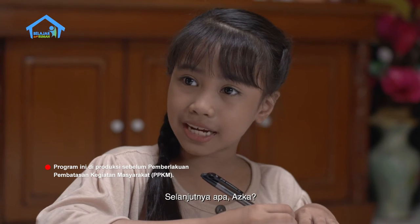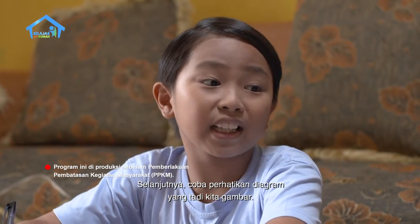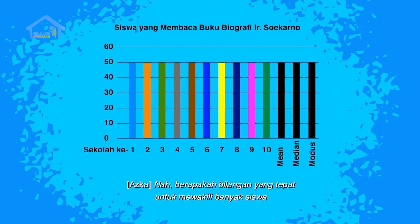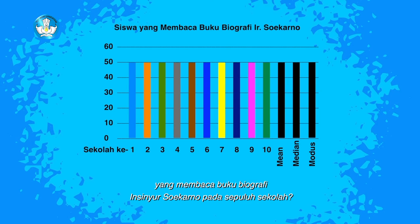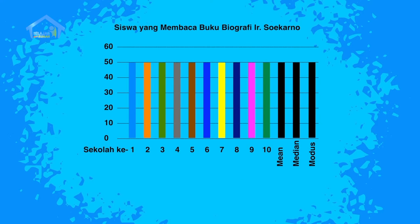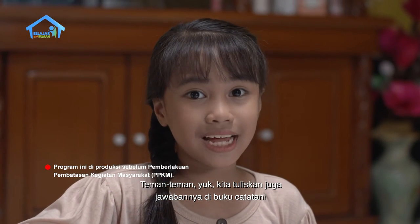Selanjutnya, coba perhatikan diagram yang tadi kita gambar. Berapakah bilangan yang tepat untuk mewakili banyak siswa yang membaca buku biografi Insinyur Soekarno pada 10 sekolah? Apakah itu nilai min, median, atau modus? Teman-teman, yuk kita tuliskan juga jawabannya di buku catatan.